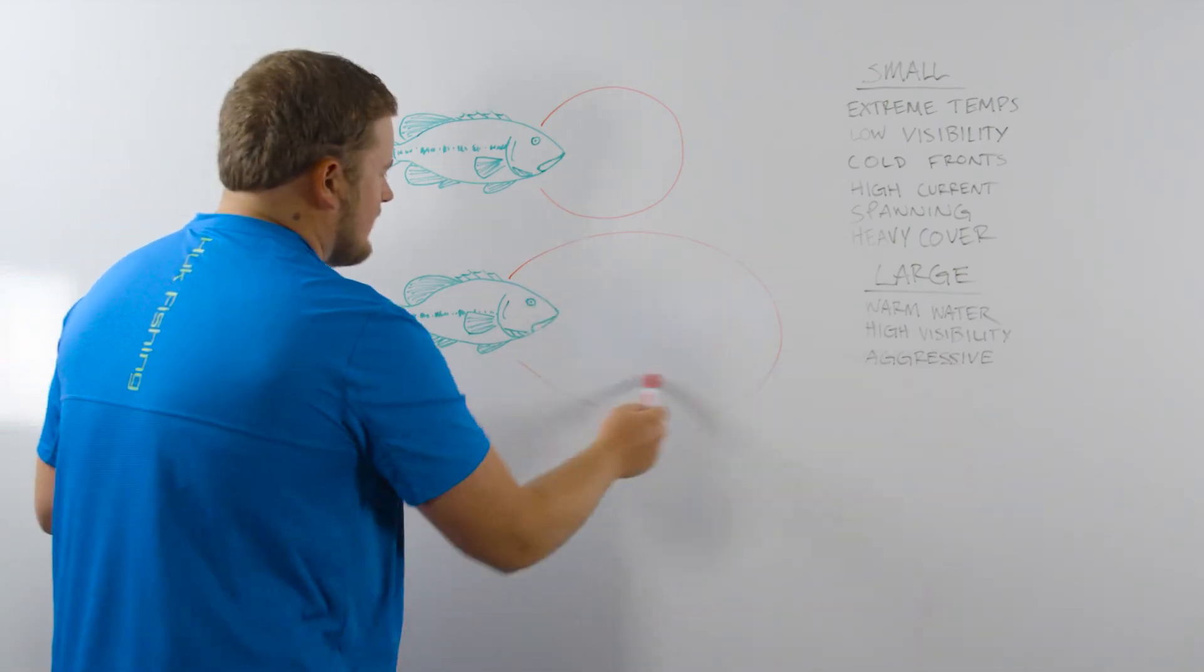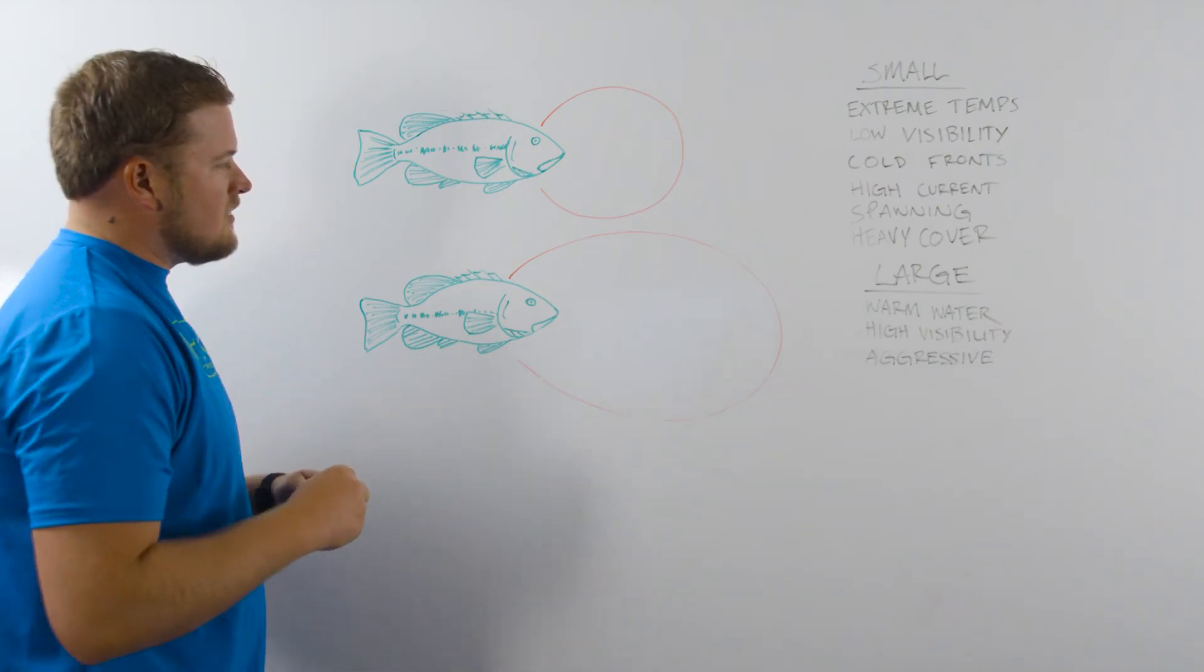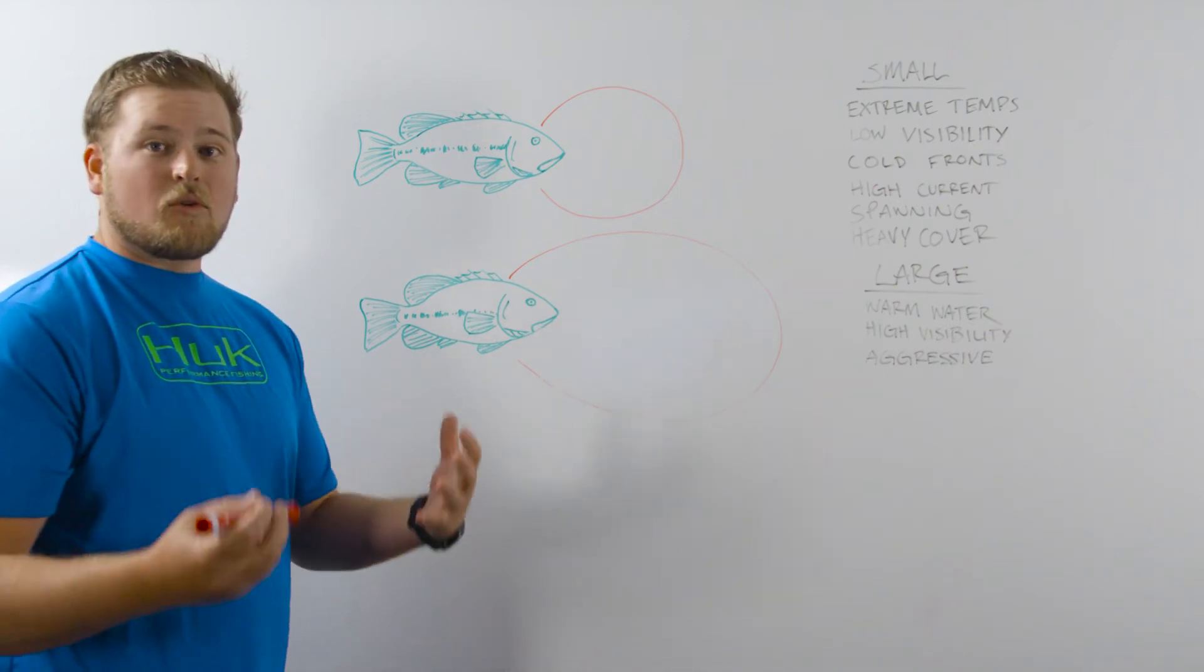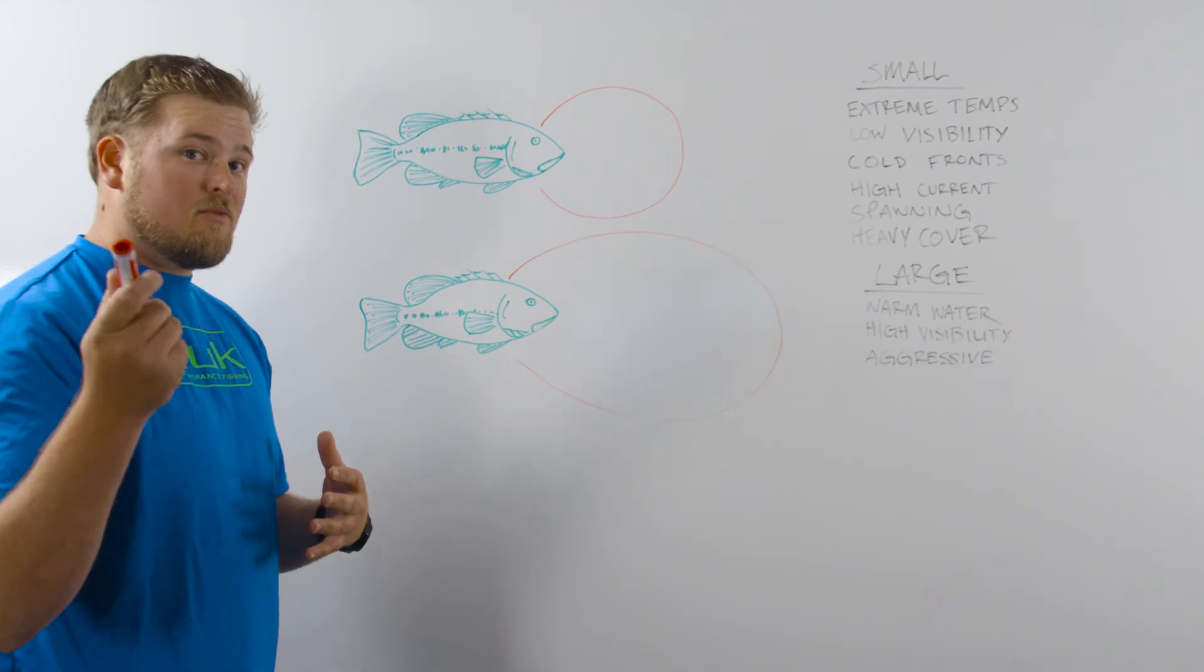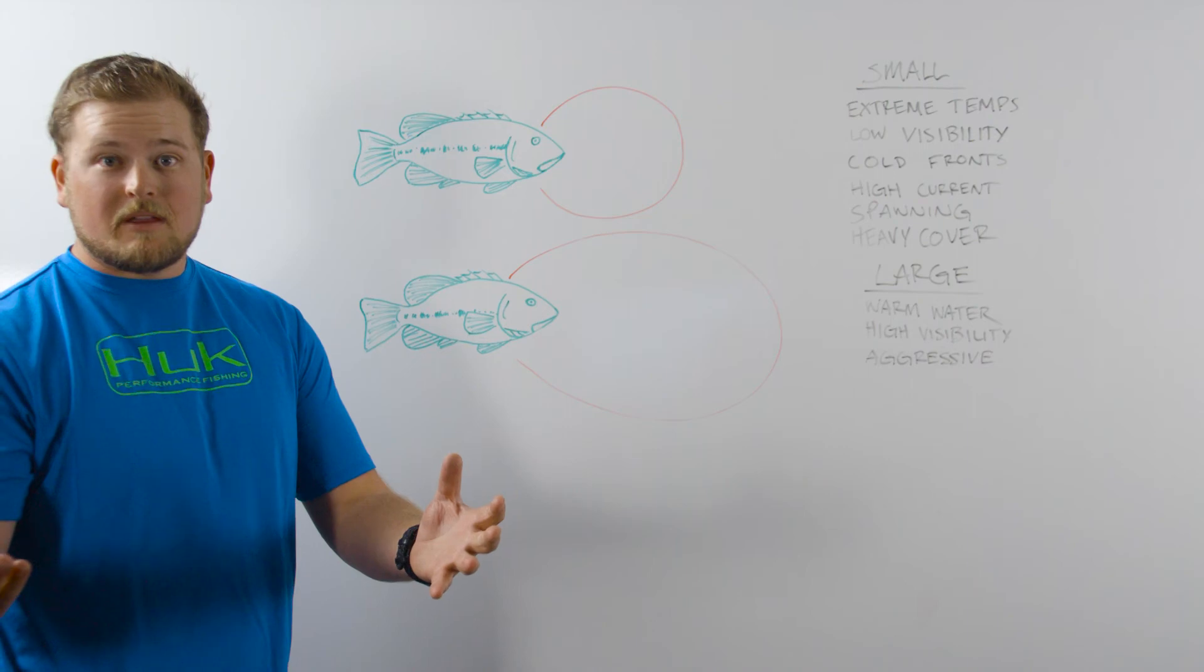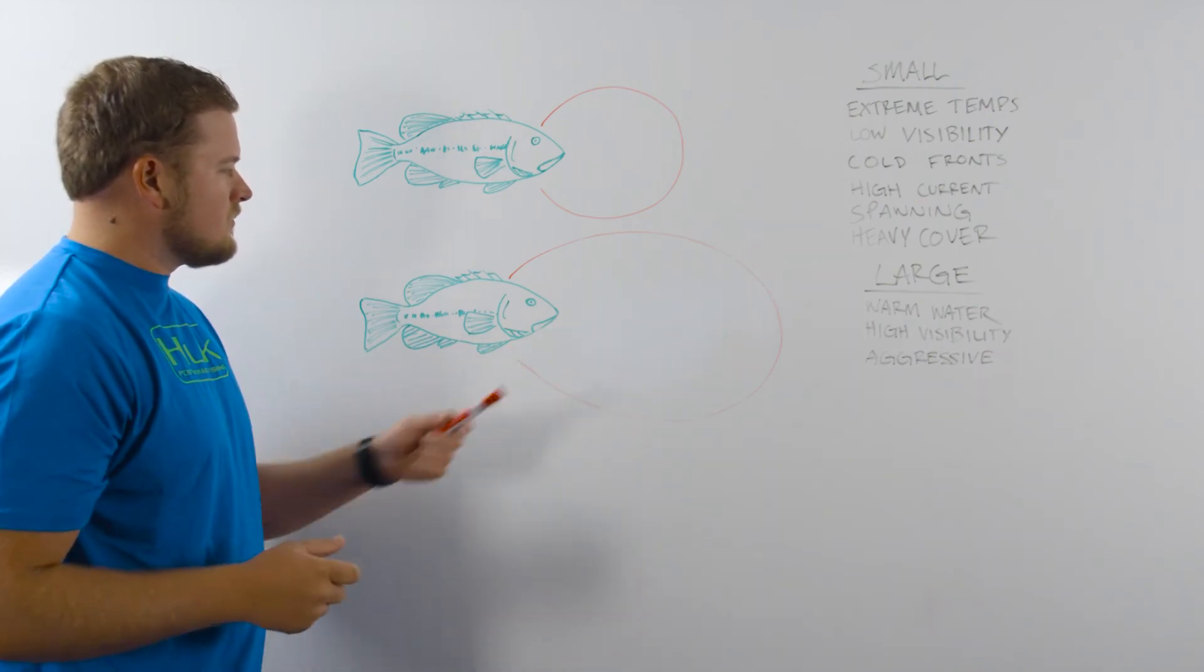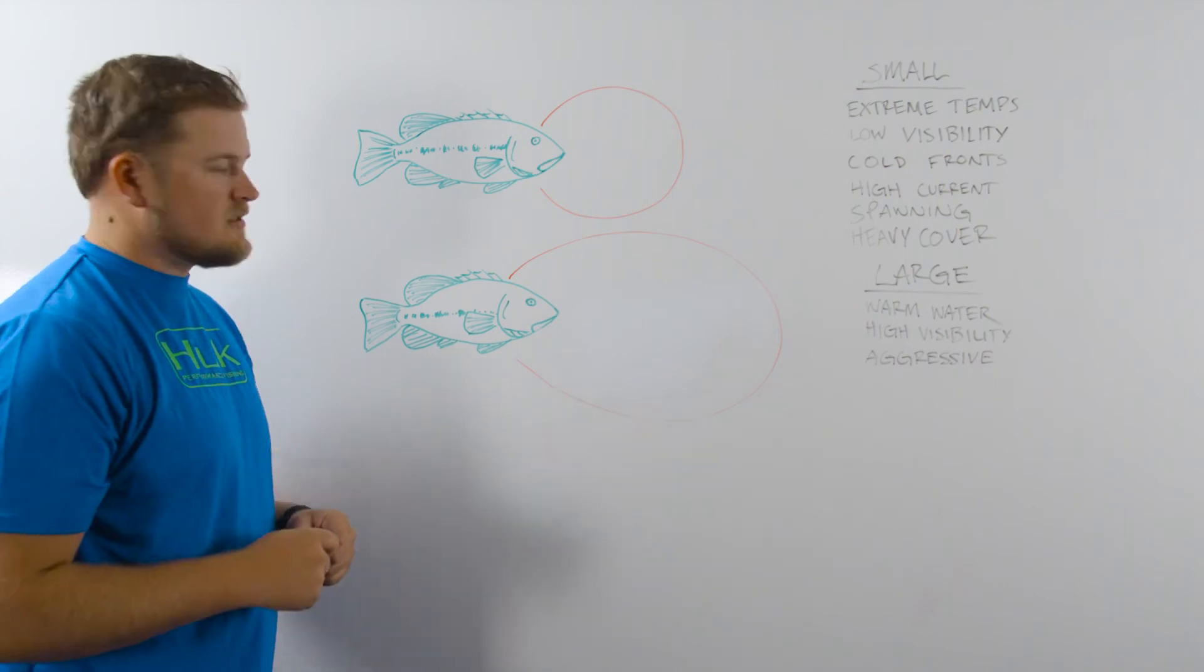But down here, if you've got more aggressive fish, you want to make sure that you use baits that can cover a lot of water quickly because you're afforded the opportunity to use reaction baits like crankbaits, spinnerbaits, chatterbaits, anything that moves quickly, you can use with a larger strike zone.